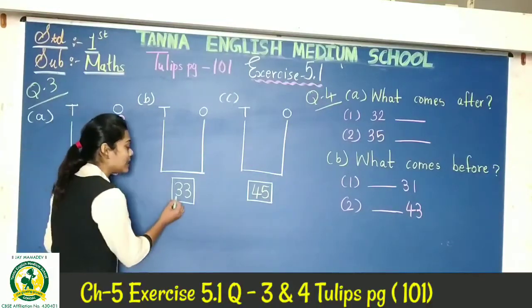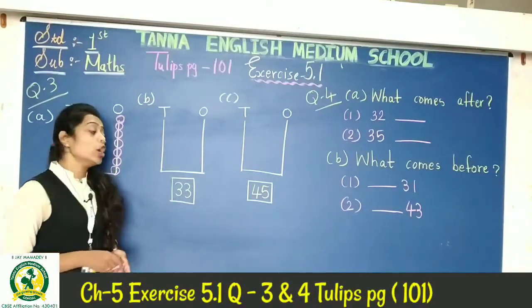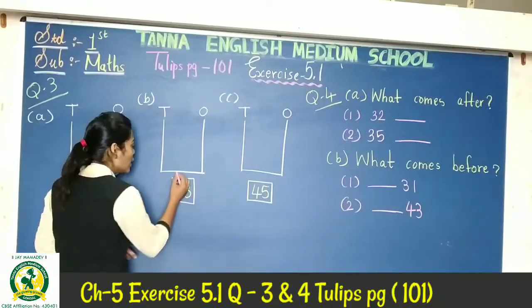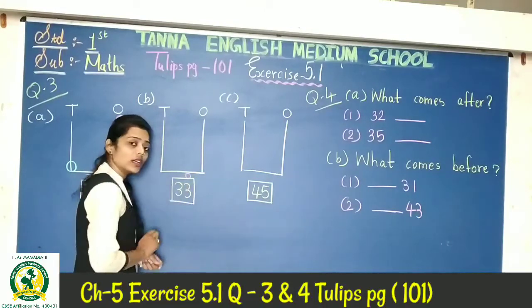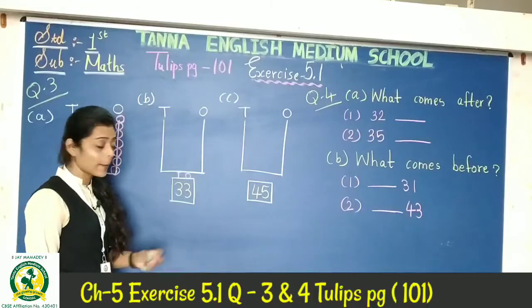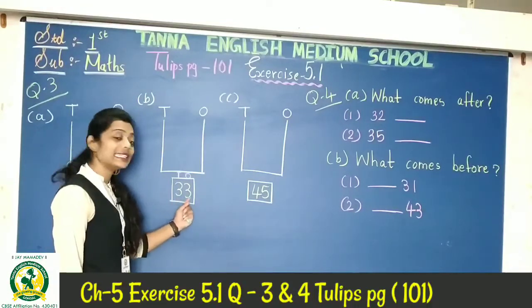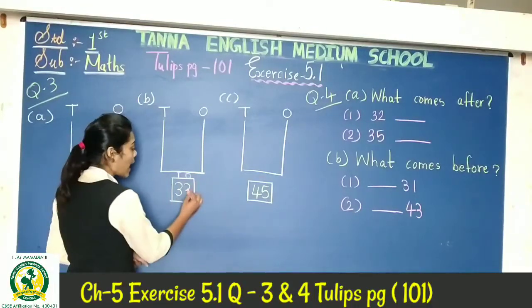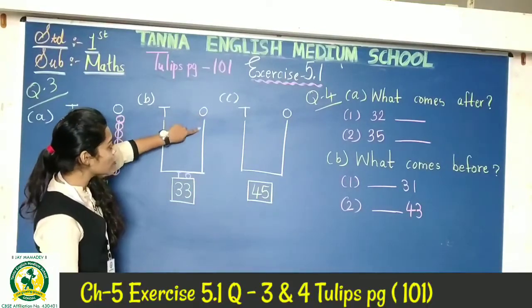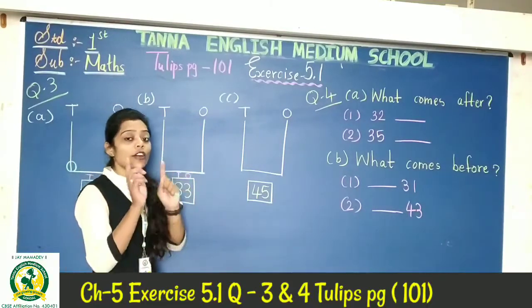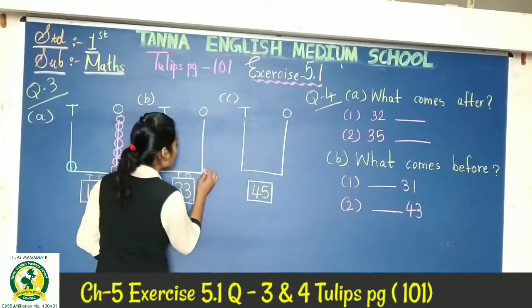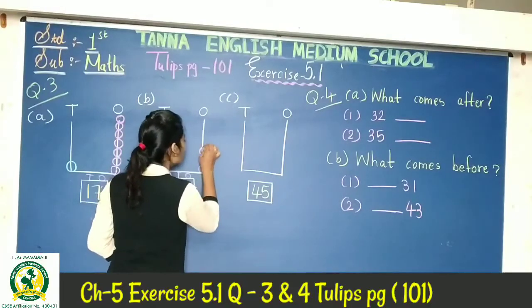Next, part B: same here, the number is 33. This is a 2-digit number. Here 3 is in the ones place and 3 is in the tens place. On the ones line, we draw 3 beads: 1, 2, 3.